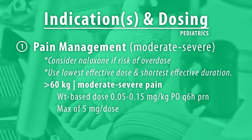Indications and dosing in pediatrics: the main indication is moderate to severe pain management, and dosing is weight-based. In patients greater than 16kg, initiate 0.05-0.15mg per kg of oxycodone by mouth every 6 hours as needed, with a maximum of 5mg per dose.